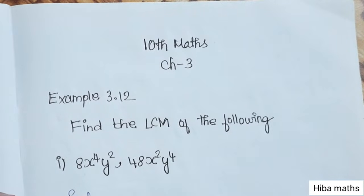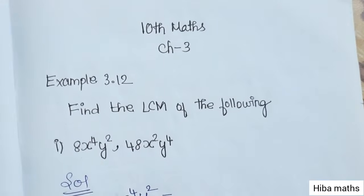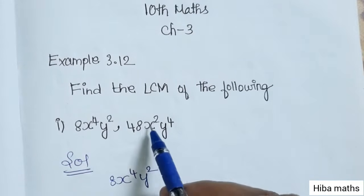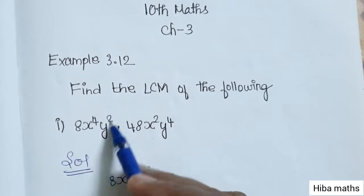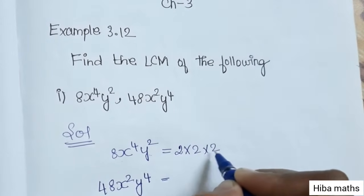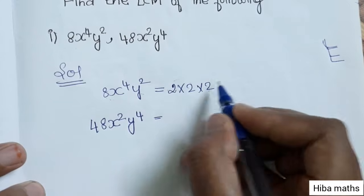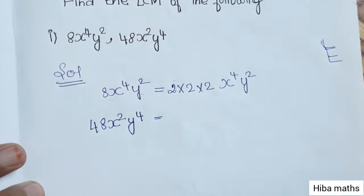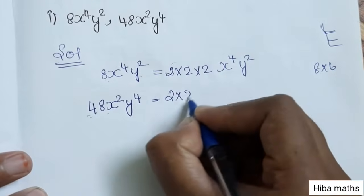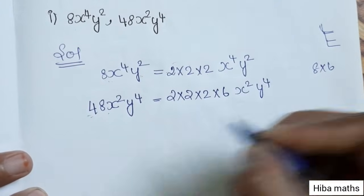Hello students, welcome to HIVA Max 10 Standard Math, Chapter 3, Example 3.12: Find the LCM of the following. There are 4 questions. The first one is 8x⁴y² and 48x²y⁴. We write 8x⁴y² as 2 into 2 into 2, and 48 as 2 into 2 into 2 into 6, using prime factorization with small numbers.